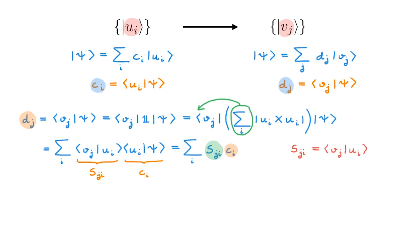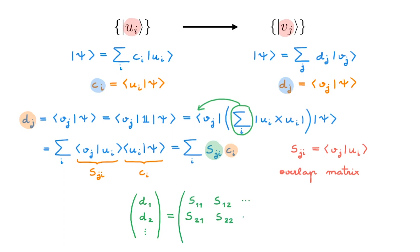The collection of scalars S_ji are called the overlap matrix. Remembering the video on the matrix formulation of quantum mechanics, we can see straight away that we can write this expression as column vector d equal to a matrix with entries S_ji multiplying the column vector c. Hence the name, overlap matrix for S.